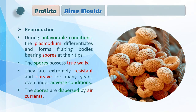The spores possess true walls — मतलब यह cell wall possess करते हैं। They are extremely resistant and survive for many years even under adverse conditions। Spores कैसे फैलते हैं? The spores are dispersed by air currents — हवा की वजह से यह spores उड़ते-उड़ते अलग-अलग जगह पर spread हो जाते हैं। जहाँ spore को favorable conditions मिलती हैं वहाँ वो germinate होते हैं और हर एक spore से एक नई slime mold produce होती है।